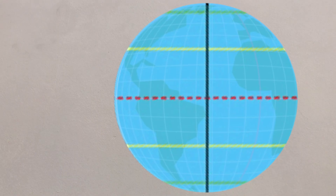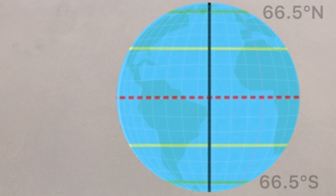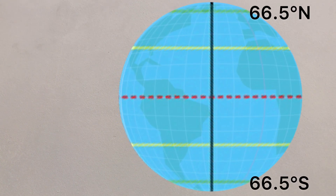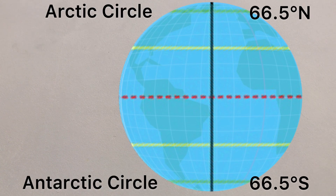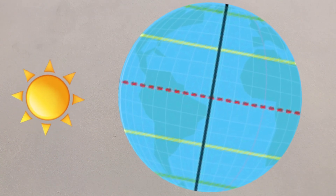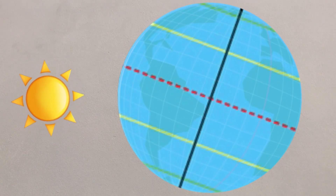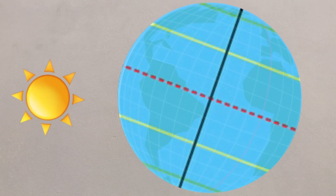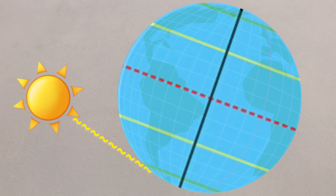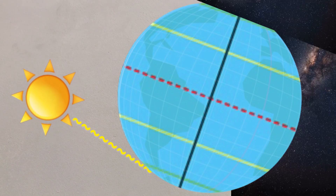Two more important lines of latitude are found at 66.5 degrees north and south, and these are the Arctic and Antarctic circles. Due to the tilt of the Earth at 23.5 degrees, areas at higher latitudes than these circles at certain points during the year will either have 24 hours of sunlight or 24 hours of darkness.